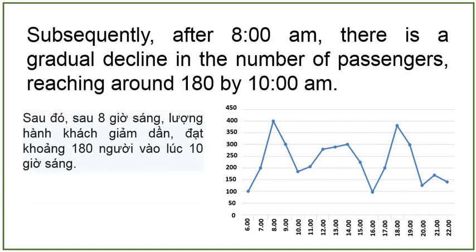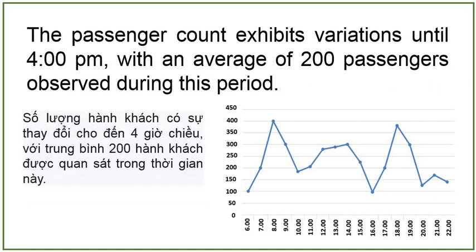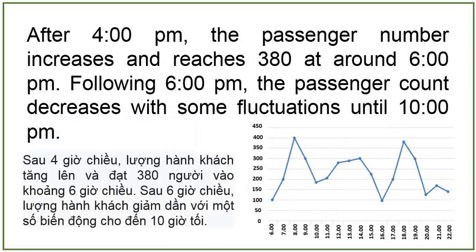Subsequently, after 8 a.m., there is a gradual decline in the number of passengers, reaching around 180 by 10 a.m. The passenger count exhibits variations until 4 p.m., with an average of 200 passengers observed during this period. After 4 p.m., the passenger number increases and reaches 380 at around 6 p.m. Following 6 p.m., the passenger count decreases with some fluctuations until 10 p.m.